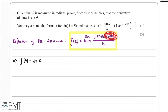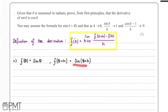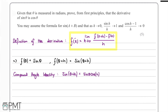We have f(θ) which corresponds to f(x) in the formula, and we now need to find f(θ + h). We can expand sine(θ + h) by using the compound angle identity: sine(θ + h) = sine θ cos h + sine h cos θ. We now have all the information required to substitute into the definition of the derivative.